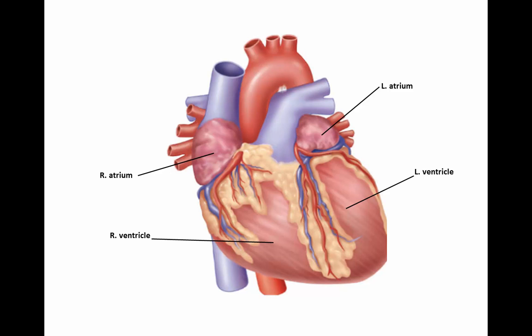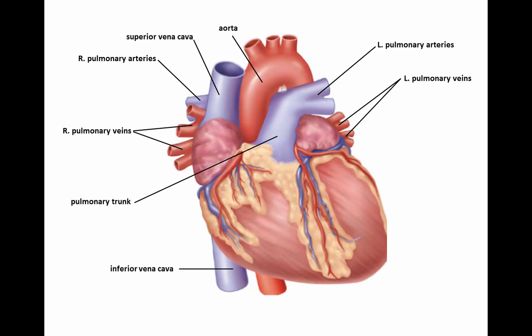First let's take a look at the human heart. Structurally it is a muscular hollow organ made up of two receiving chambers — the right atrium and the left atrium — and two pumping chambers — the right ventricle and the left ventricle. Two major arteries through which blood passes exiting the heart are the pulmonary trunk and the aorta.